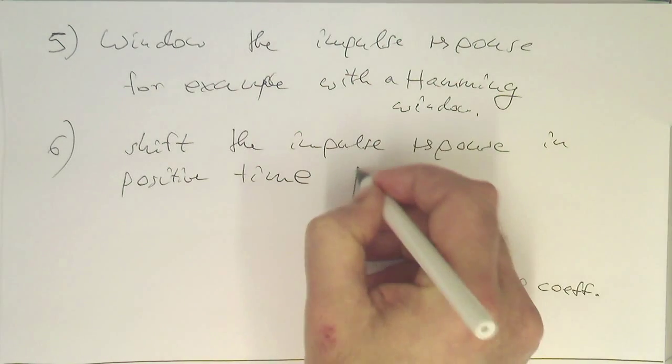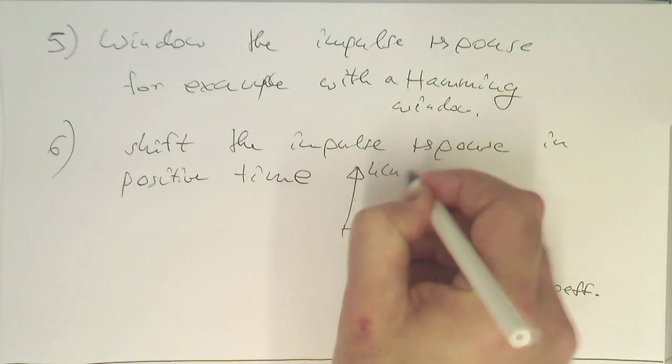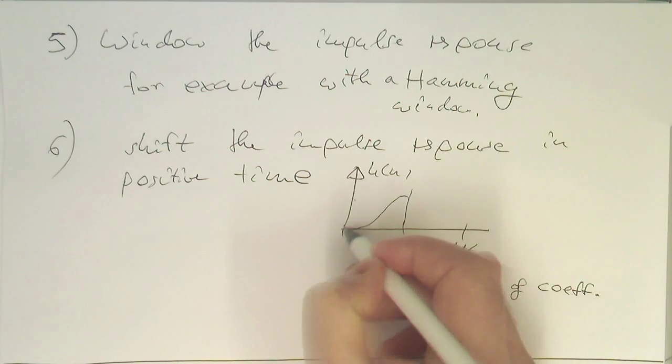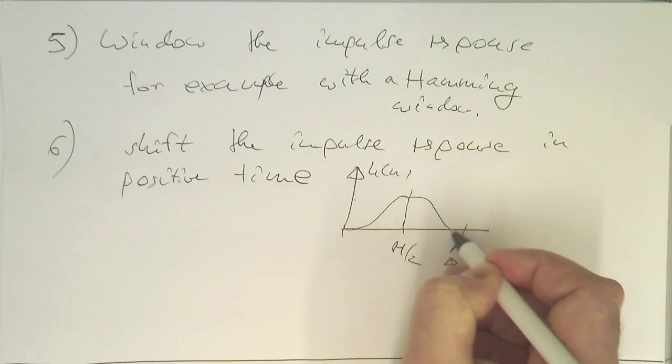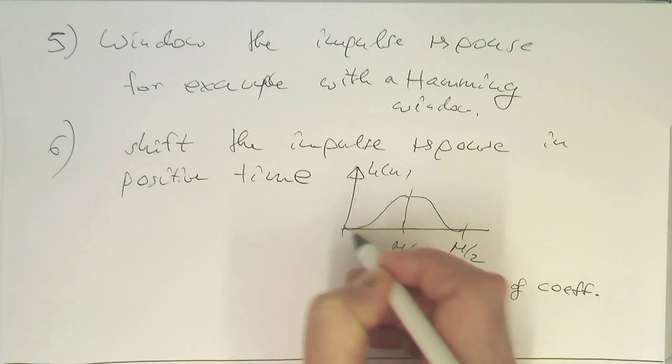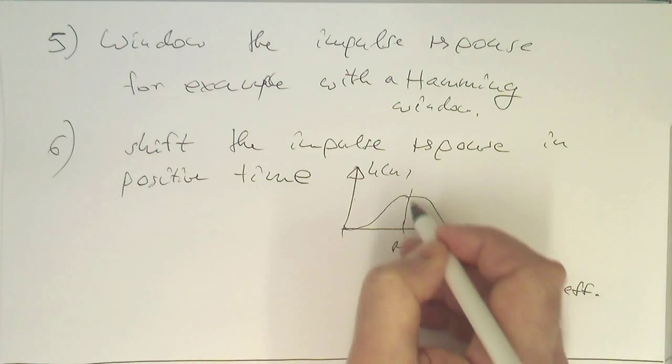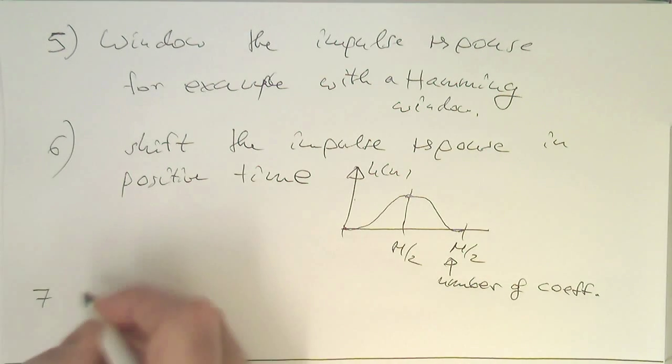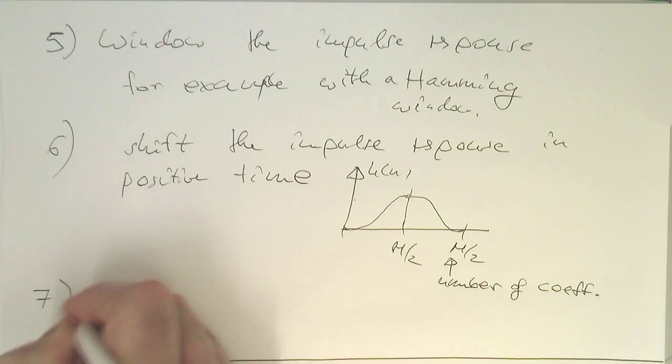And this is here, M half. And this is here, our H of N, our shifted H of N. That this is here, sitting like that. Let's have this nicely windowed, that it's becoming zero on the edges here. And so, these here, becoming our coefficients here.